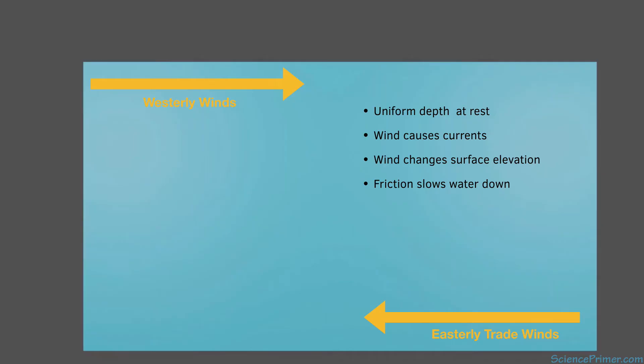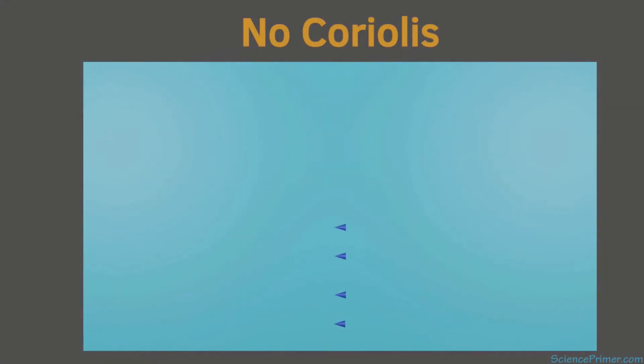The first scenario he modeled was the movement of water particles when there was no Coriolis effect.